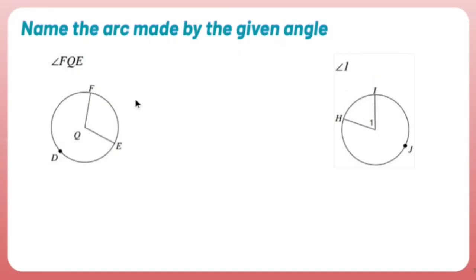Name the arc made by the given angle. I'm given these pictures and there's ways that you can name arcs. An arc in a circle is basically if you were to look at the outside of the circle, if I were to go from A to B, I could name that arc, arc AB.